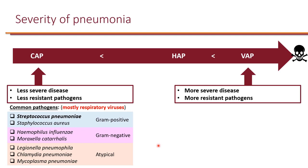Streptococcus pneumoniae is by far the number one respiratory pathogen causing pneumonia. Although Staphylococcus aureus can also cause CAP, not every patient needs MRSA coverage, and we'll talk about that more shortly. There are a couple of gram-negative organisms likely to cause CAP: Haemophilus influenzae and Moraxella catarrhalis. Of note, these two pathogens in the United States are likely to produce beta-lactamases, which is important to keep in mind when selecting treatment.